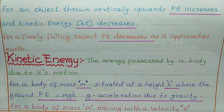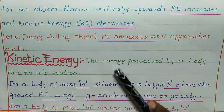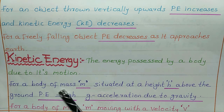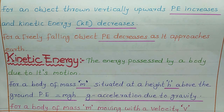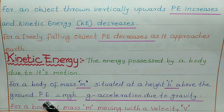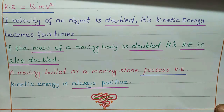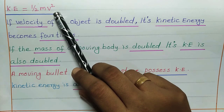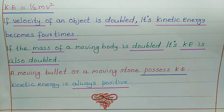Kinetic energy is the energy possessed by a body due to its motion. For a body of mass m situated at a height h above the ground, potential energy equals mgh, where m is mass, h is height, and g is acceleration due to gravity. For a body of mass m moving with velocity v, kinetic energy equals half mv squared, where m is mass and v is velocity.